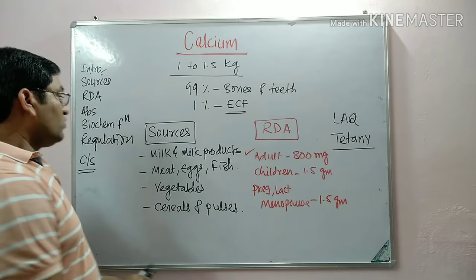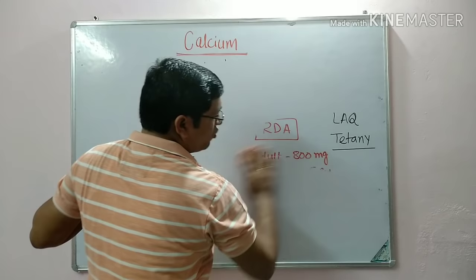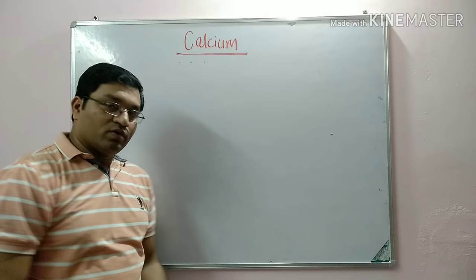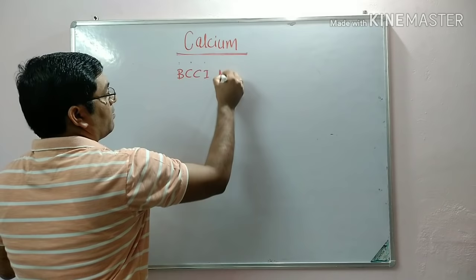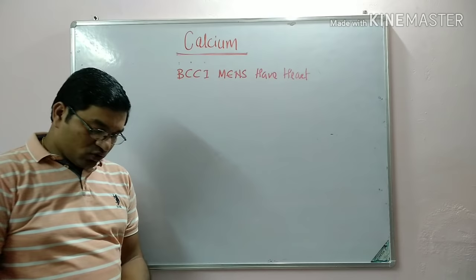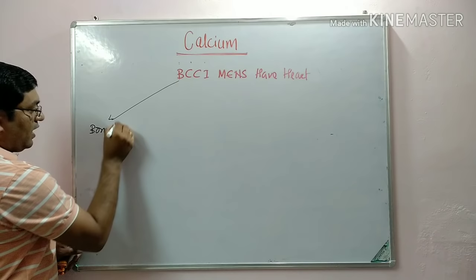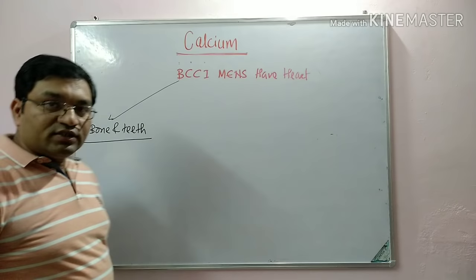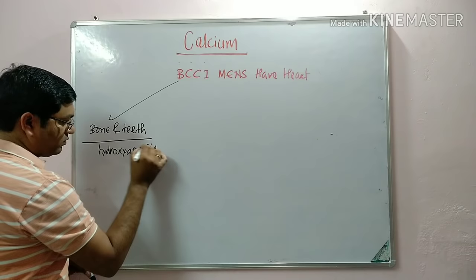Now coming to the biochemical functions. There is a mnemonic for remembering the calcium functions: BCCI — 'have heart.' Calcium B is for bone and teeth formation. Calcium, along with phosphate, is required for the formation of hydroxyapatite, and it helps in the mineralization of bone.